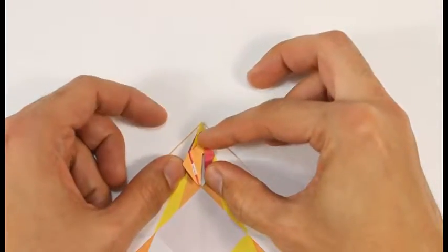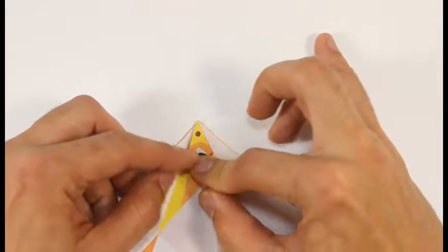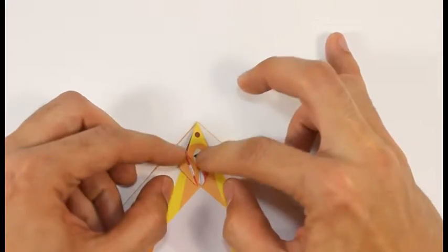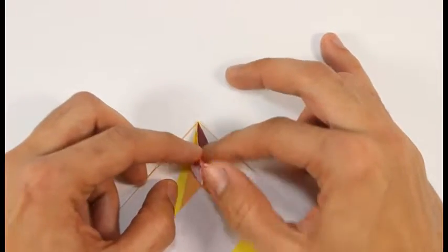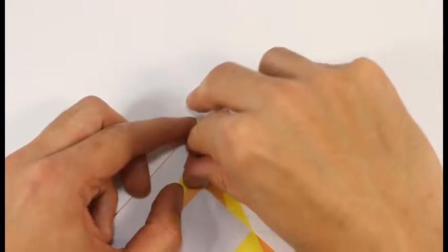This is tricky because it's small. But it should form another point that we're going to fold back down. Repeat on the other side.